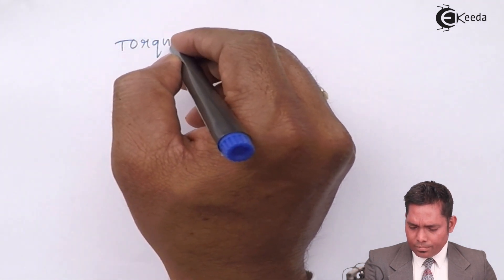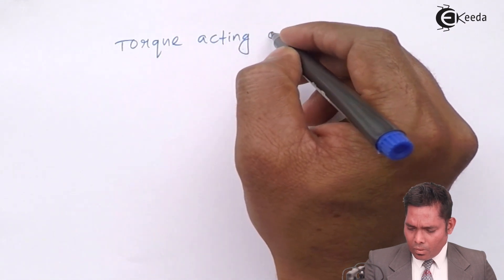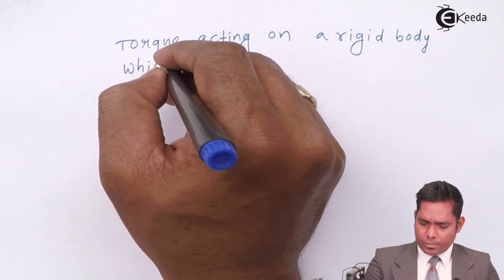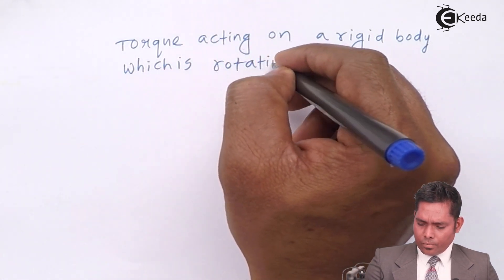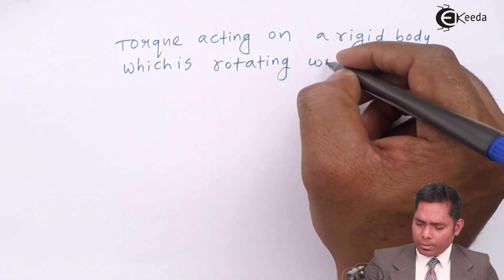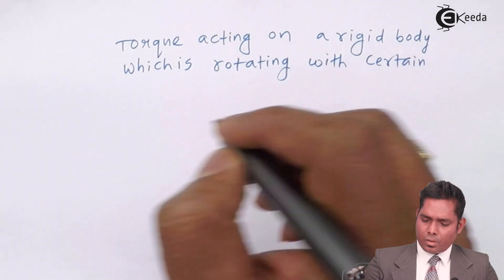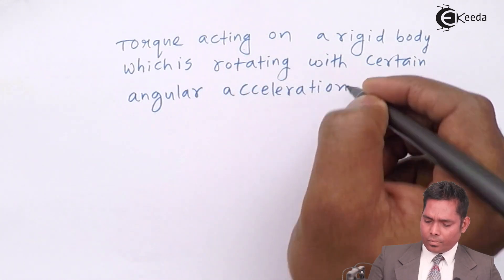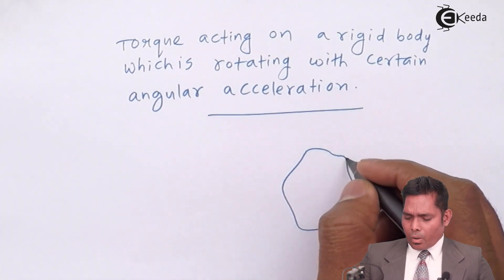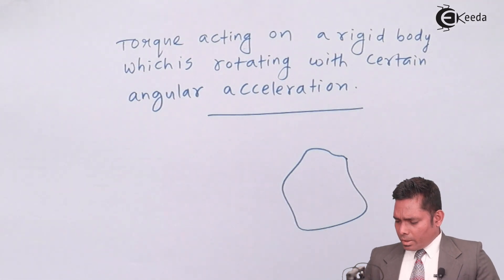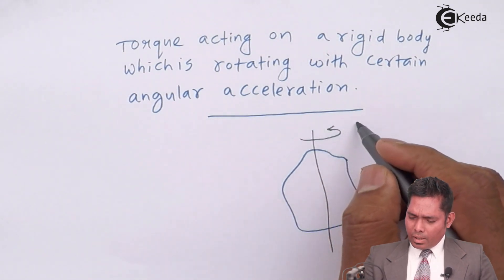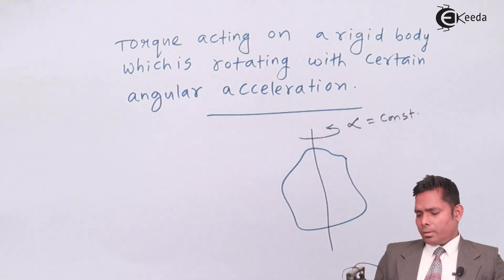Hello students, let us find the torque expression for torque acting on a rigid body which is rotating with certain angular acceleration. I consider an arbitrary shape of the body and supposing that this is the axis of rotation, and the body is rotating with alpha, constant alpha.